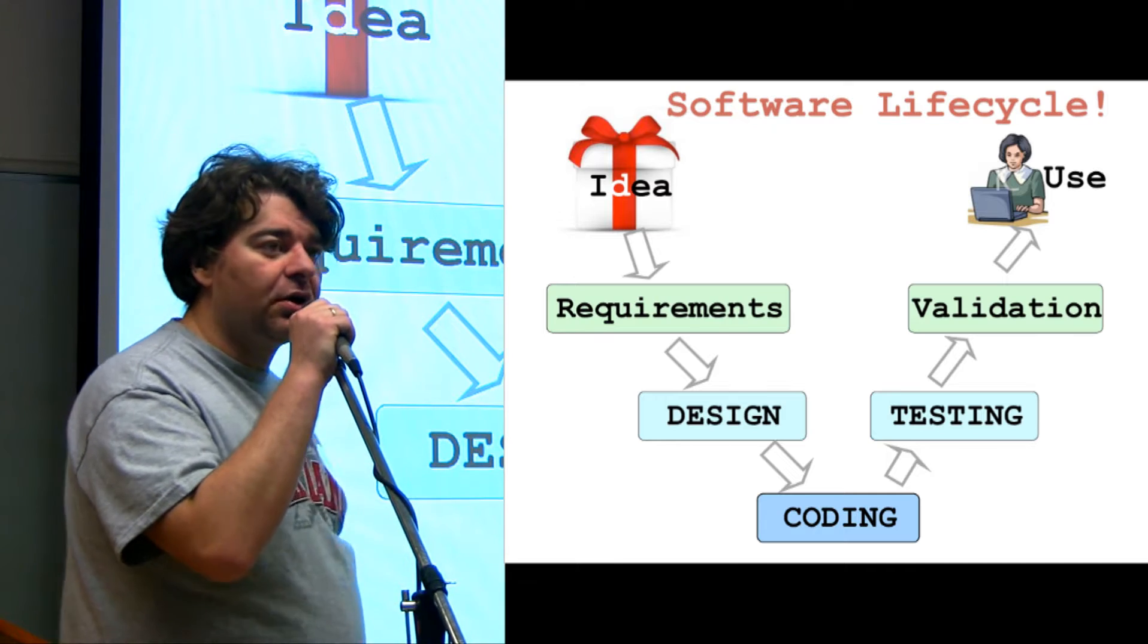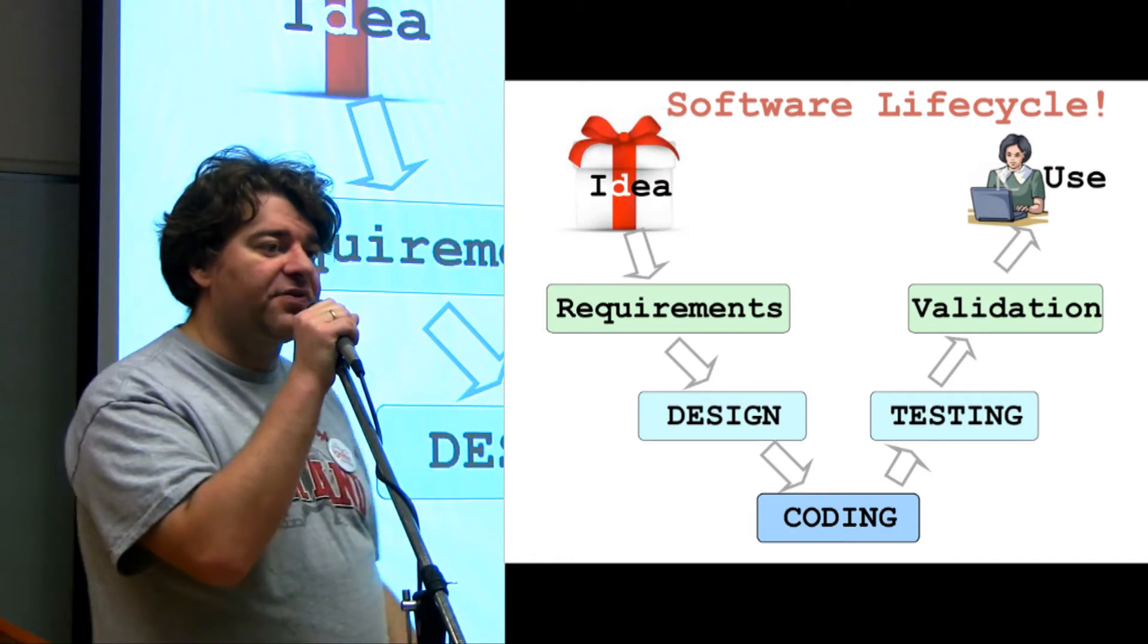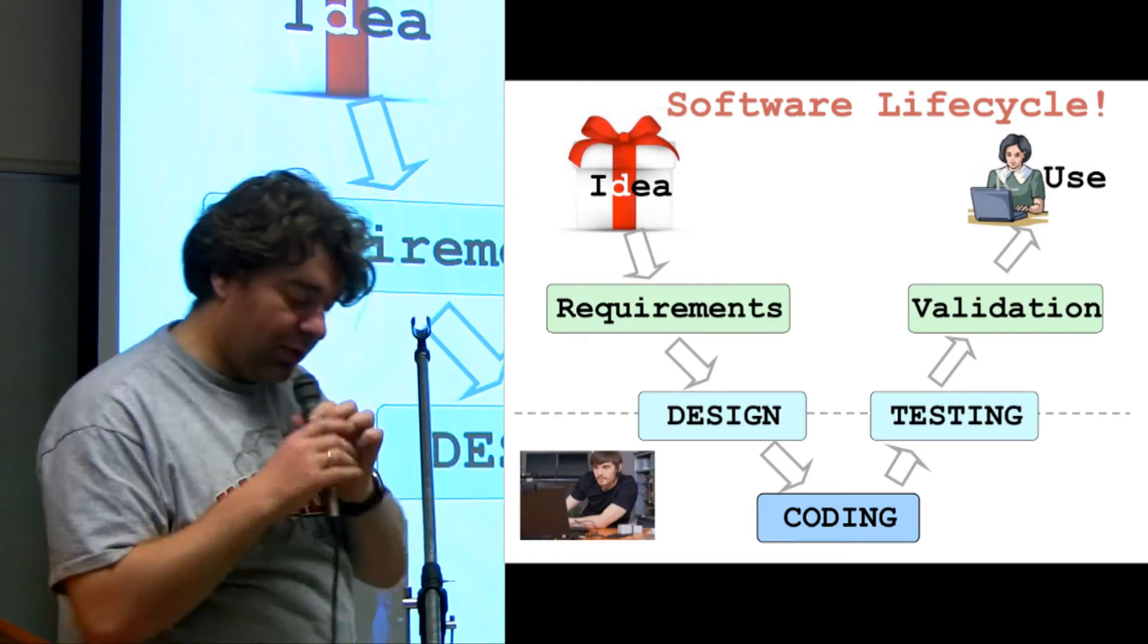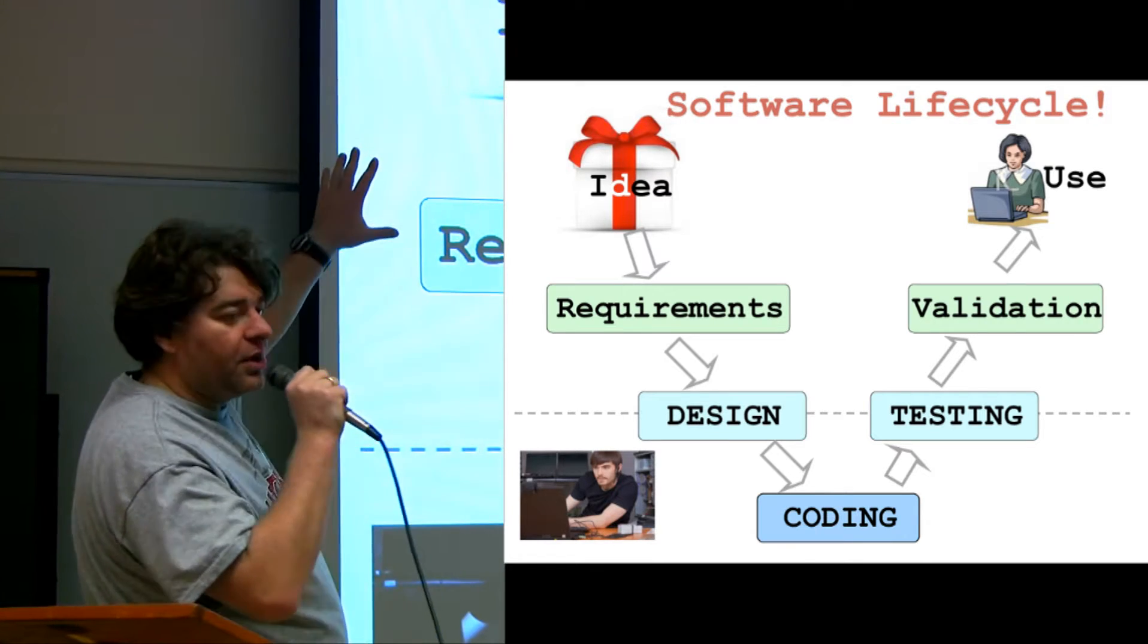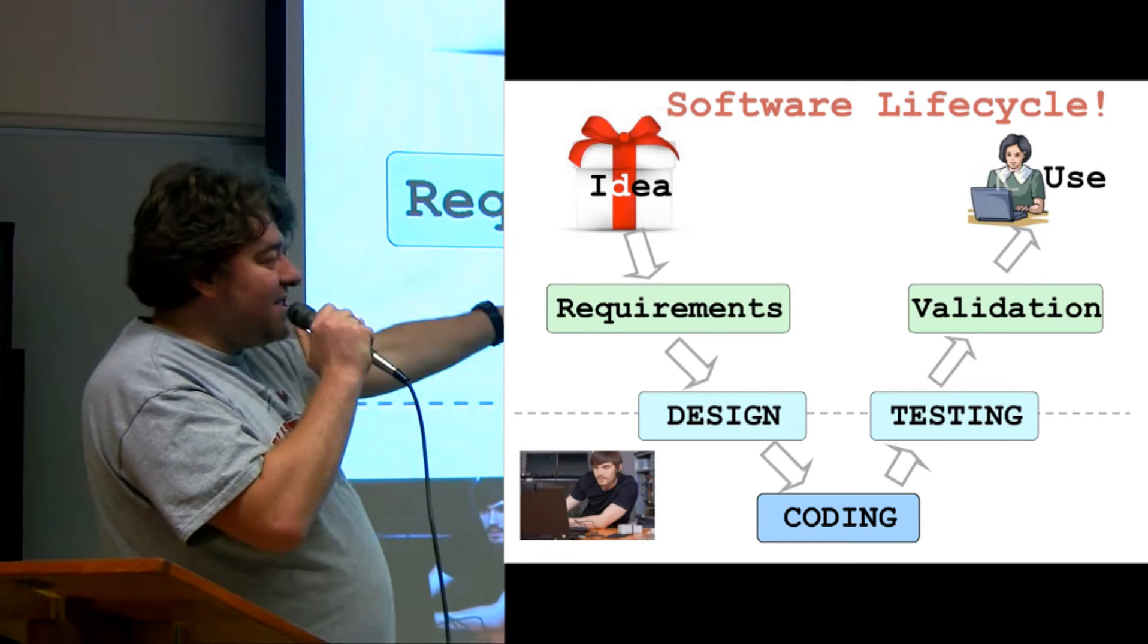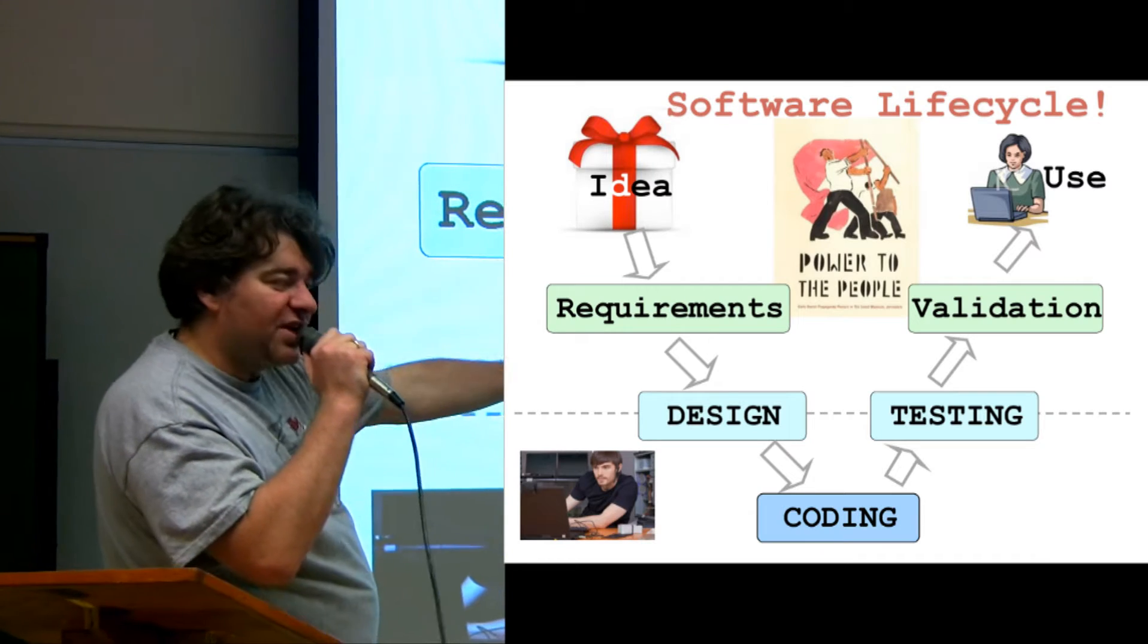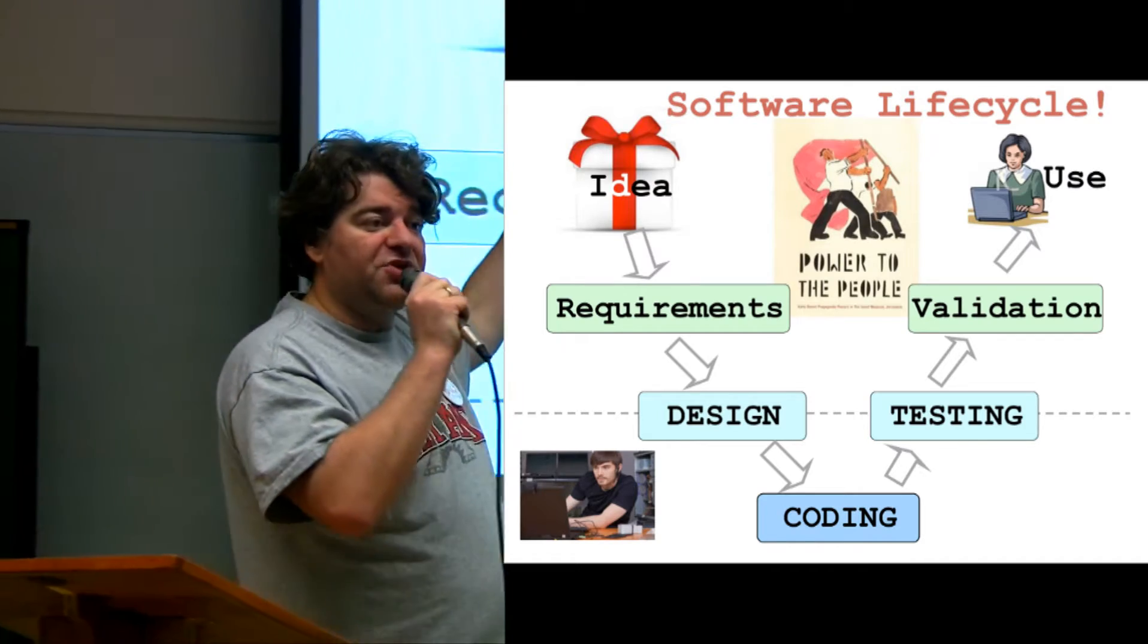In fact, almost every single, even very simple model of the software development process puts coding as just one little part of the entire thing. What you get to see is the fact that we start with an idea, and we proceed with a really bright software idea to requirements, from there to design. Then only we get to code, and then after the code is complete, there's still testing, validation, and making sure we can use the software. So, only the coding and parts of testing and design need to be done by people who know how to program. Everything else can be done pretty much by anybody.